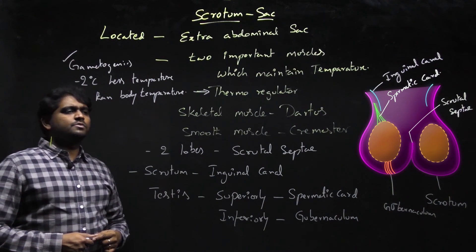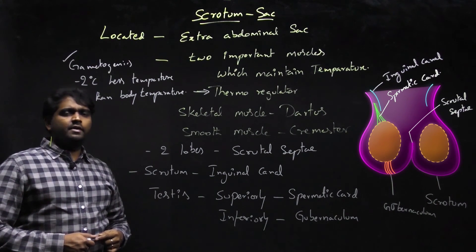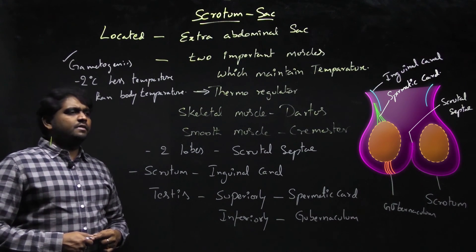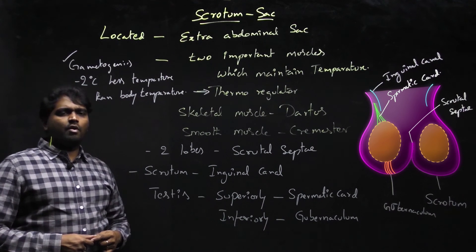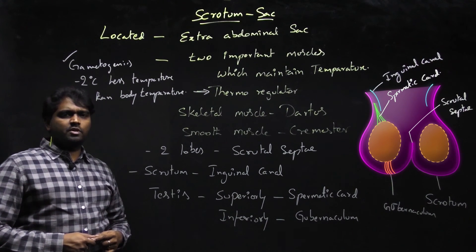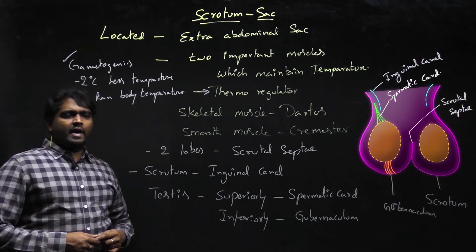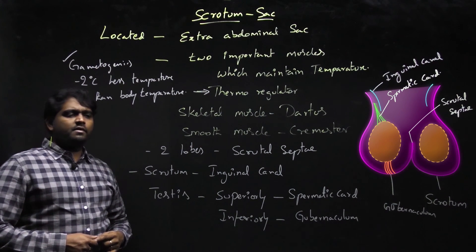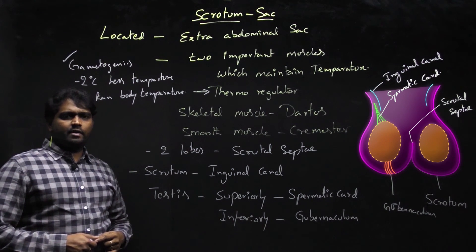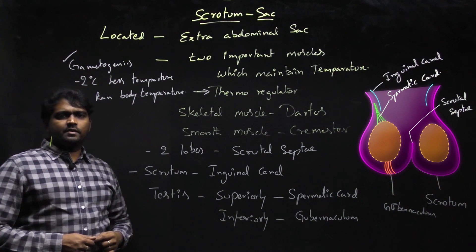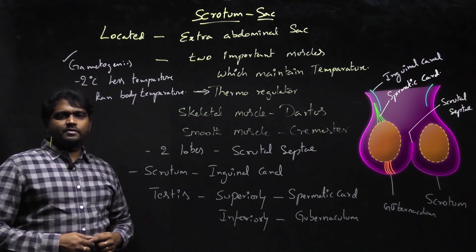These are very important conditions for gametogenesis. The scrotal sac is divided into two lobes by the scrotal septum and is hanged by the inguinal canal. The two testes occupy these two lobes, hanged superiorly by the spermatic cord and inferiorly by the gubernaculum. This is about the scrotal sac. I hope you understand the content, thank you so much.